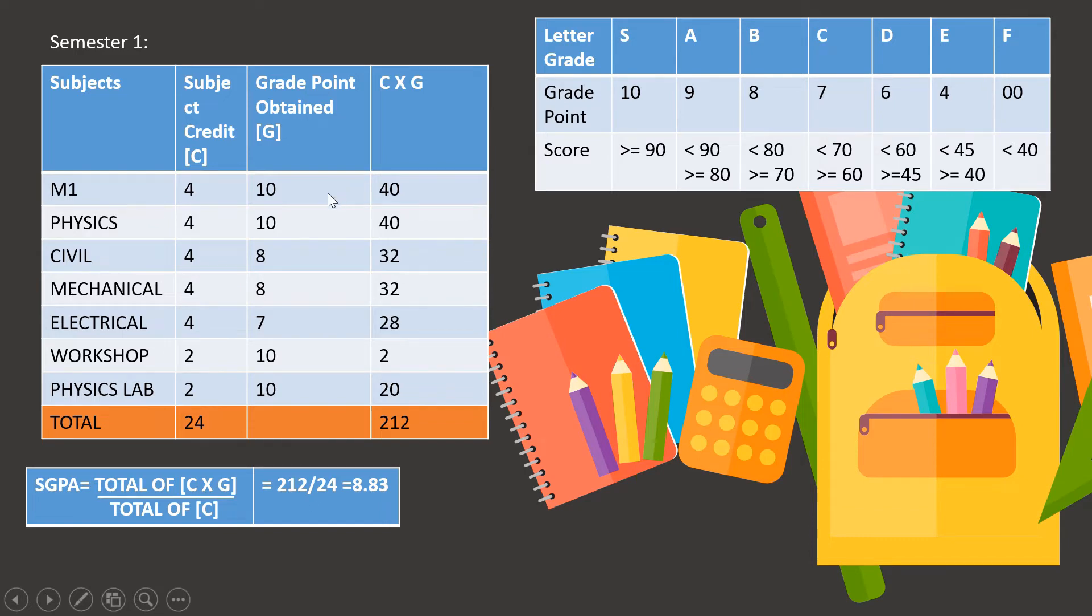Now, you will have to look at your marks and then decide which grade point it is. Suppose you have got 96 in math, it will be 10. In physics, if you have got 92, it will still be 10. And if you have got 75 in civil, it will be 8 and so on. Just look at your marks and according to that, write down your grade points.